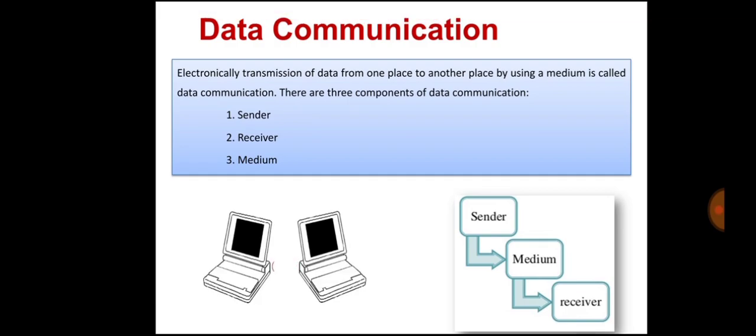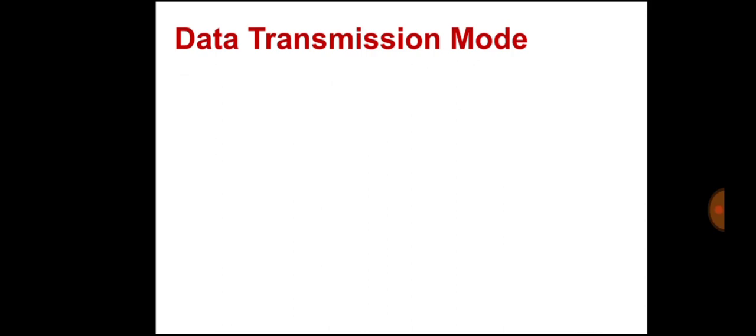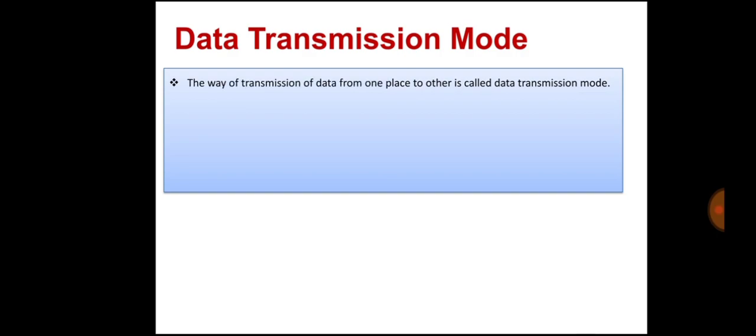Next is transmission modes. Transmission mode refers to the mechanism of transferring data between two devices connected over a network. It is also known as communication mode. These modes direct the direction of flow of information. There are three types of transmission modes: simplex mode, half duplex mode, and full duplex mode.